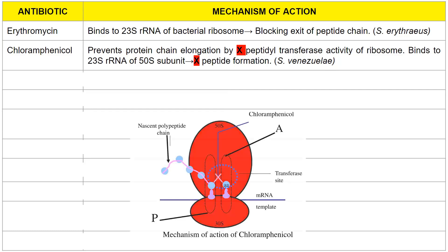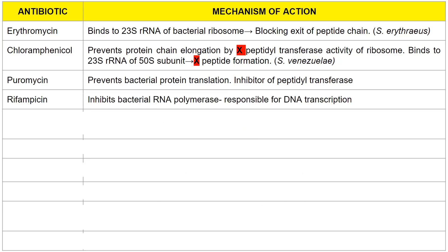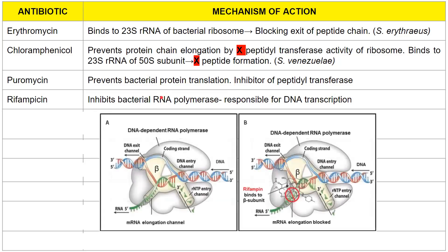Next we have puromycin, which prevents translation by inhibiting peptidyl transferase. Next we have rifampicin, a very commonly used drug. Rifampicin inhibits the bacterial RNA polymerase, which is responsible for the transcription process.